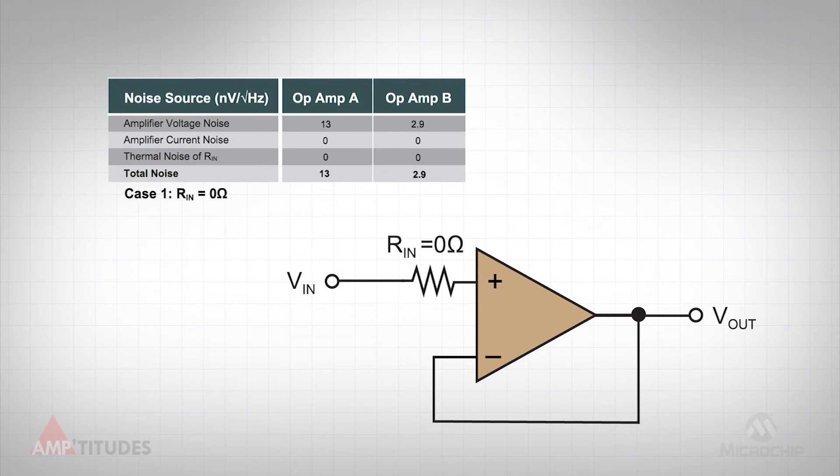For the first case, let's set Rn to zero. Hence, the thermal noise of the resistor is zero, and the current noise of the amplifier is also eliminated, since this current must flow through an impedance to cause a voltage error. In this case, the noise is dominated by the voltage noise of the amplifier. Hence, op amp B is the better choice.